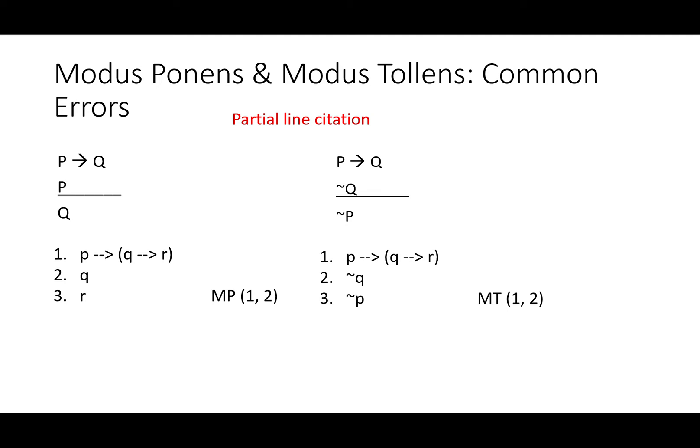Here are some kinds of partial line citation. In the first example, 'if P then (if Q then R)': we cite Q and try to get R. For modus ponens that would be fine, except we're citing the wrong arrow — that's not the main operator. Similarly for modus tollens, not Q gets us not P. But here, even though the arrow is the main operator, the parentheses are preventing us from using it correctly. Q isn't the consequent — the consequent is 'if not Q then R'.